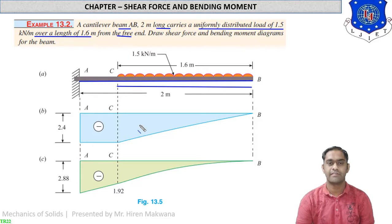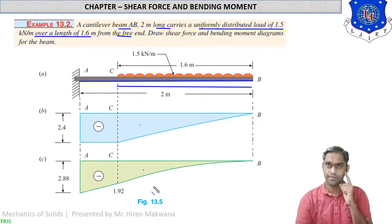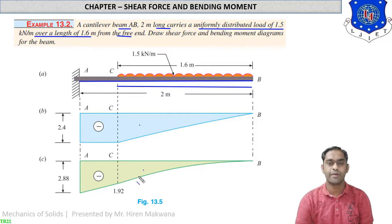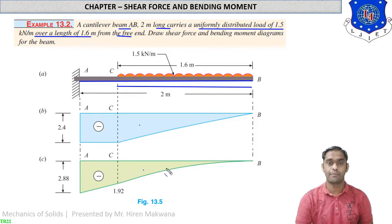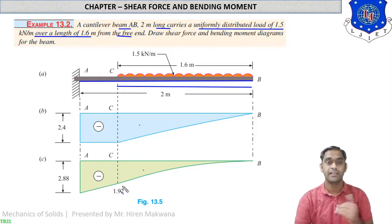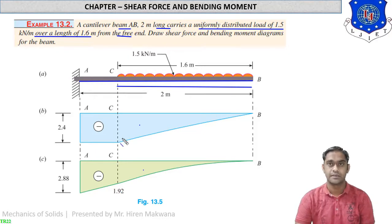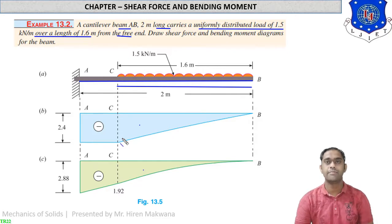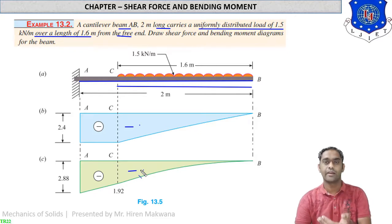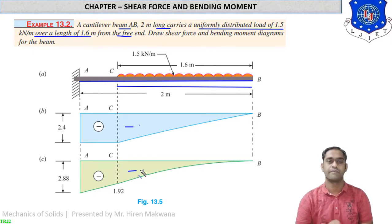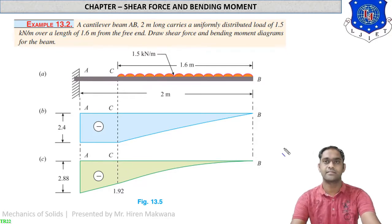This is the shear force diagram and this is the bending moment diagram. Remember that when UDL comes into the picture, in the bending moment diagram we have to draw a parabola. One more thing to remember: in cantilever beams, the shear force diagram as well as the bending moment diagram are both negative — both are below the x-axis always. Let us see the calculations now.